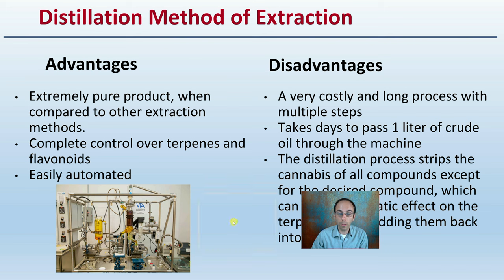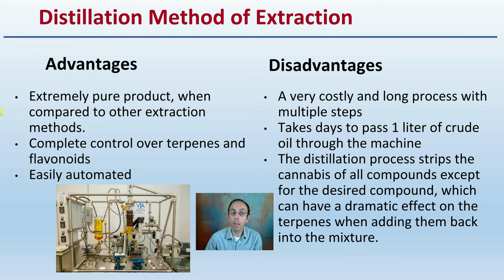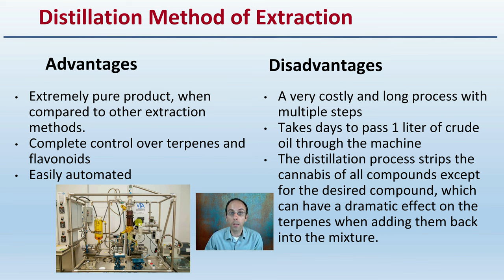There is also the distillation method of extraction. This is an extremely pure product compared to other extraction methods, with complete control over terpenes and flavonoids, easily automated, and it allows for very specific compounds to be extracted into separate containers. However, this can be a very costly and long process with multiple steps — it can take days to pass one liter of crude oil through the machine. The distillation process strips the cannabis of all compounds except for the desired compound, which can have a dramatic effect on the terpenes when adding them back into the mixture.